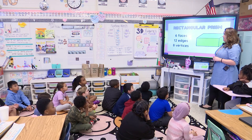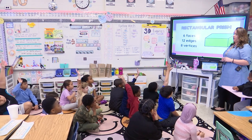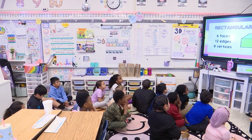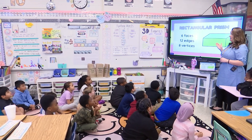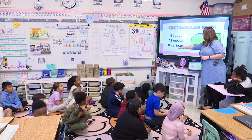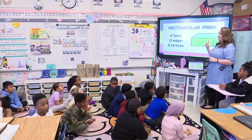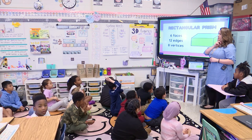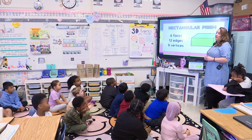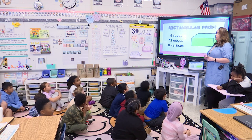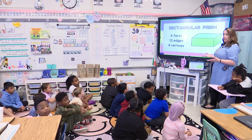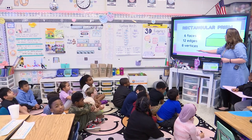Who remembers the name of this one? It's a hard name. Rectangular prism. It has a lot of similarities with the cube — the same number of faces, edges, and vertices. What is different about a rectangular prism? It's like a square stretched out. The faces on a rectangular prism are rectangles, not squares like the cube. So that's the difference, but those numbers are the same.